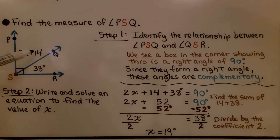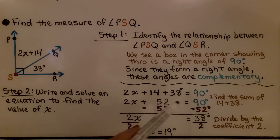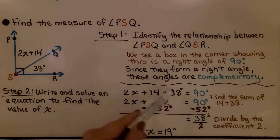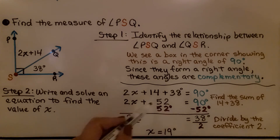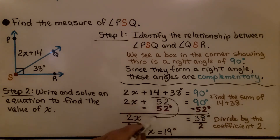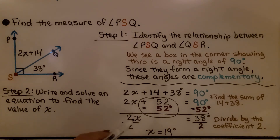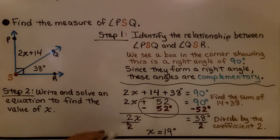We have 2x plus 14 plus 38 degrees is equal to 90 degrees. We find the sum of 14 plus 38, which is 52. We subtract 52 from each side to eliminate it, and we're left with 2x is equal to 38 degrees. To isolate x, we divide both sides by the coefficient 2. We get 2 over 2, which is 1, so 1x is equal to 19 degrees. We know x is equal to 19 degrees.